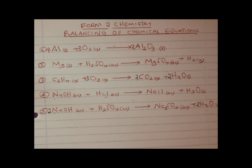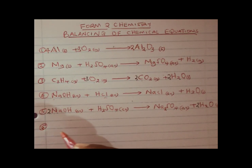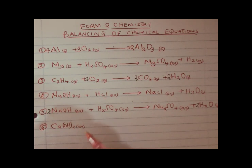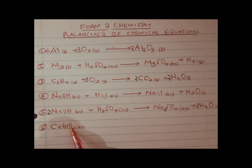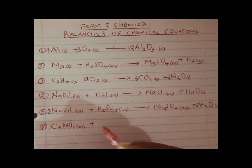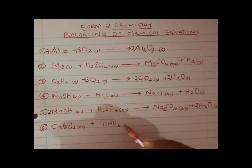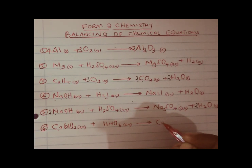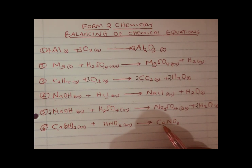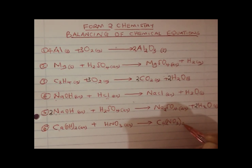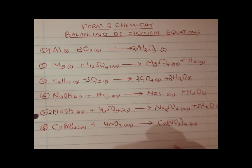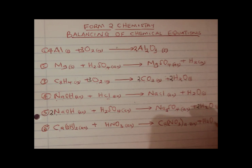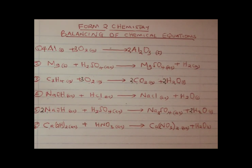Let us have another example. Let me take a base — for example, calcium hydroxide, aqueous. Remember, calcium has a valency of 2 that it gives to the hydroxide ion. We are going to react it with an acid like nitric acid. Calcium will take the nitrate so that we have calcium nitrate. Remember, calcium has a valency of 2 which it gives to the nitrate to give us calcium nitrate — this is a soluble salt and therefore we use aqueous. The hydroxide and the hydrogen will give us water. Remember, water is a liquid.